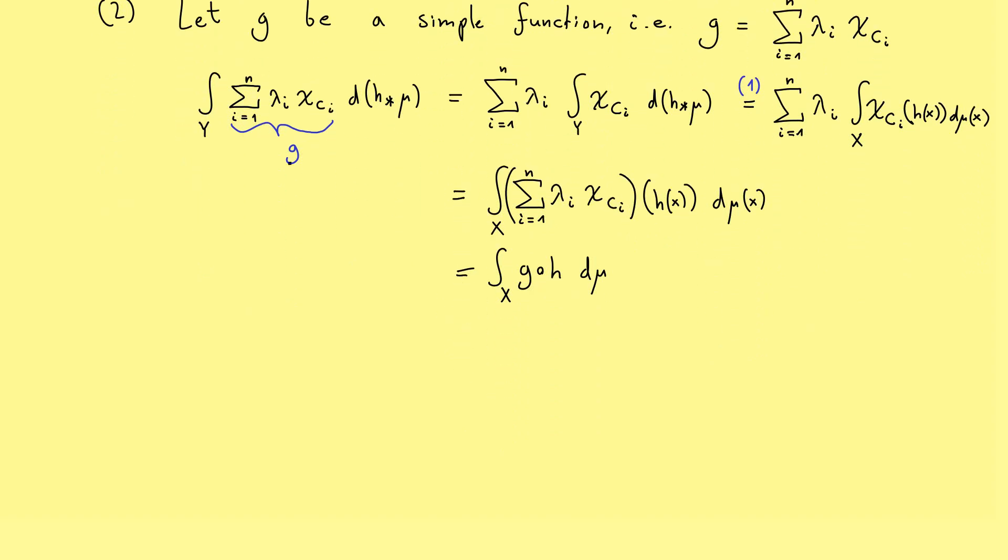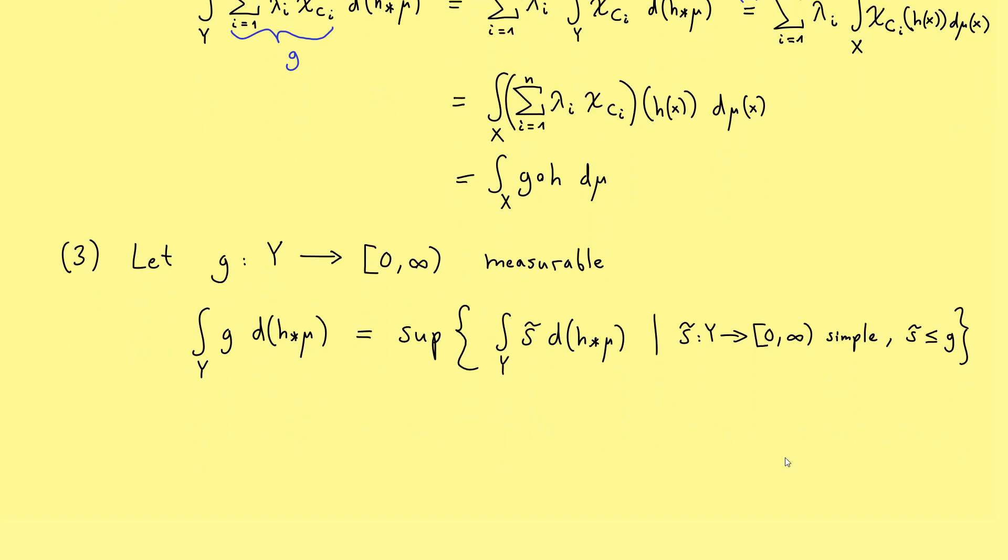Obviously, we want to generalize that even more and just use a measurable function g. However, it's easier to write it down first for non-negative functions. At this point, please recall the definition of the Lebesgue integral, which just needs simple functions. The integral of the function g is just given by the supremum of the integrals of some simple functions. Maybe here it's helpful to denote the simple functions by s̃. Hence, we write down s̃ is a non-negative simple function, and it should lie pointwise below our function g.